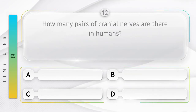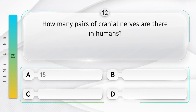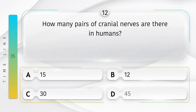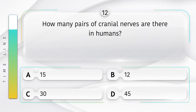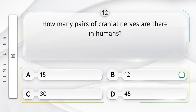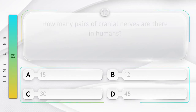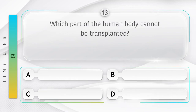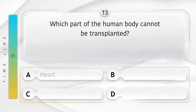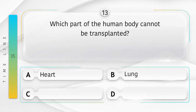How many pairs of cranial nerves are there in humans? Option A: 15, B: 12, C: 30, D: 45. Answer is option B: 12.